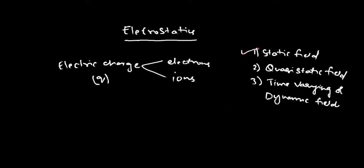We look at the first field: static field. This is the one we are going to discuss in electrostatics. The name signifies that we are trying to understand the properties of static electric field. Now, what do you mean by static? Static relates to the stationary nature of the field — the properties that remain constant over a period of time. So the charge Q that produces this field can produce a static field only if its position is constant.